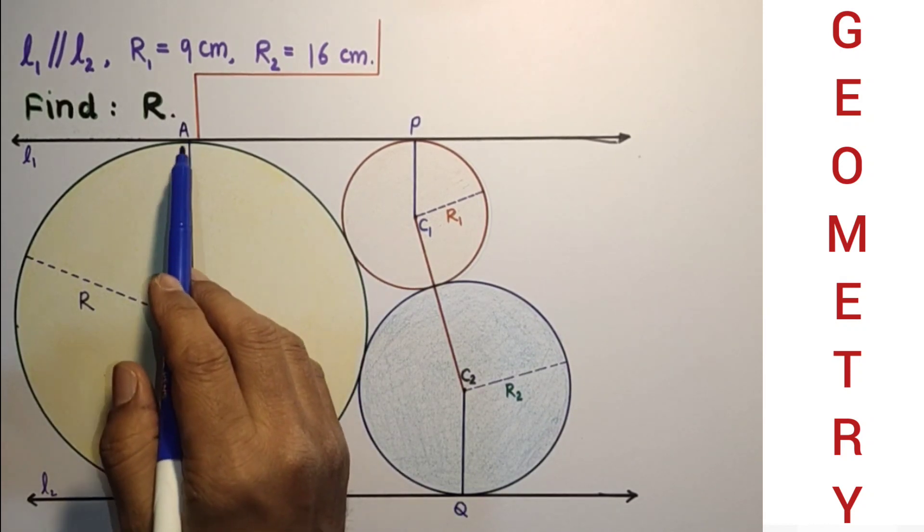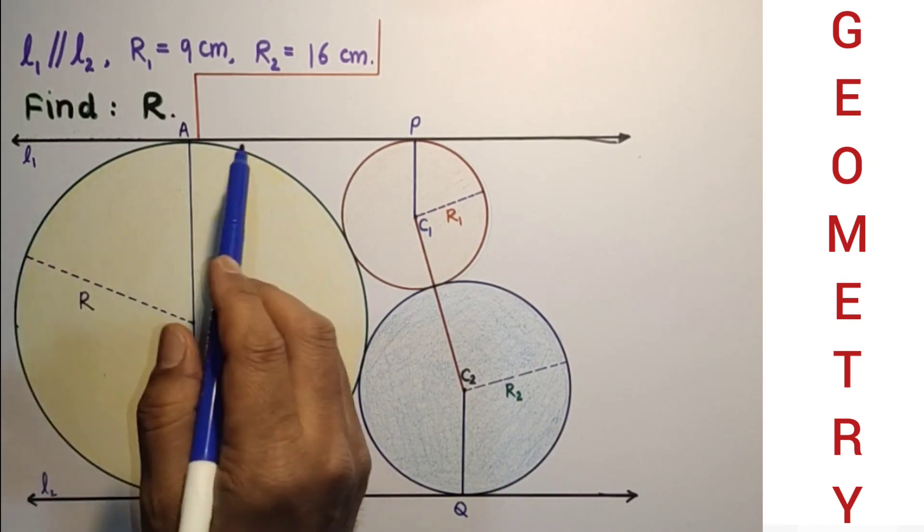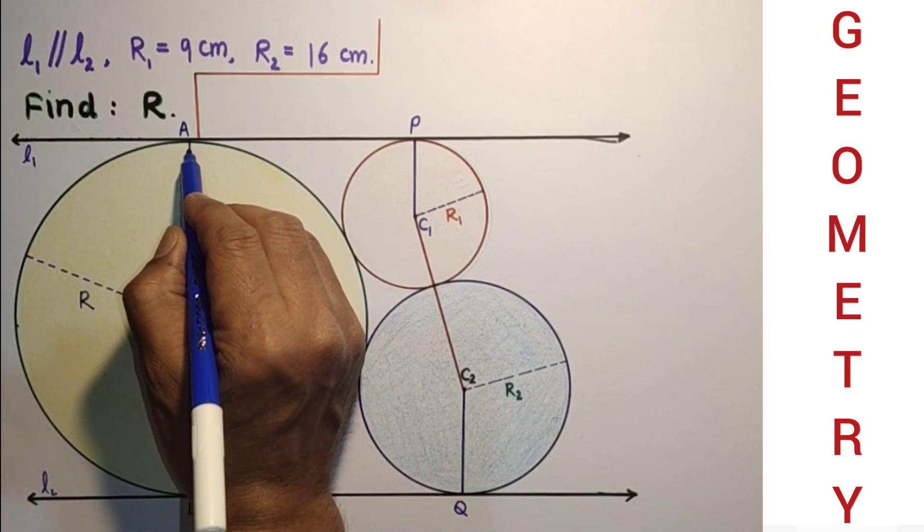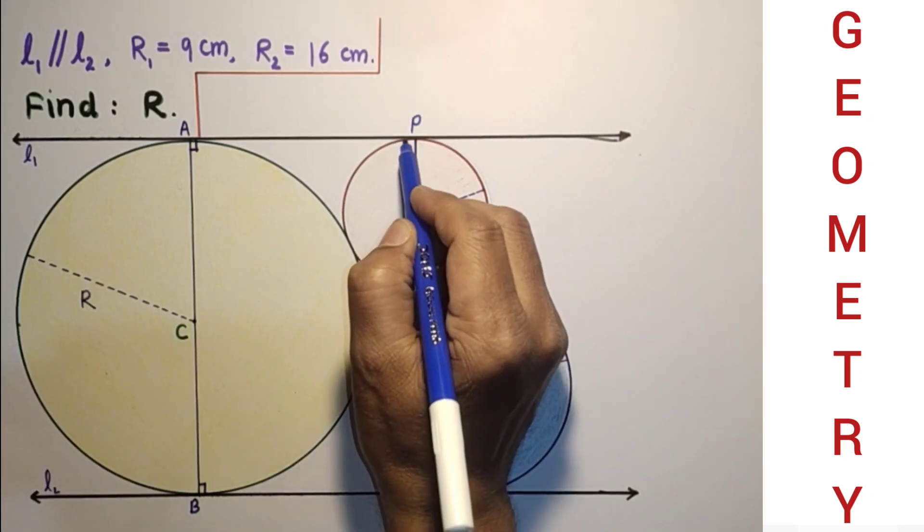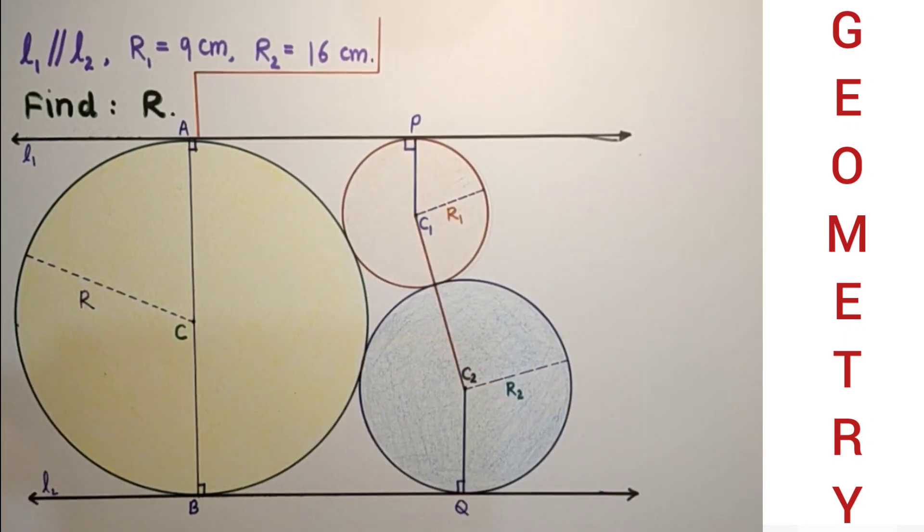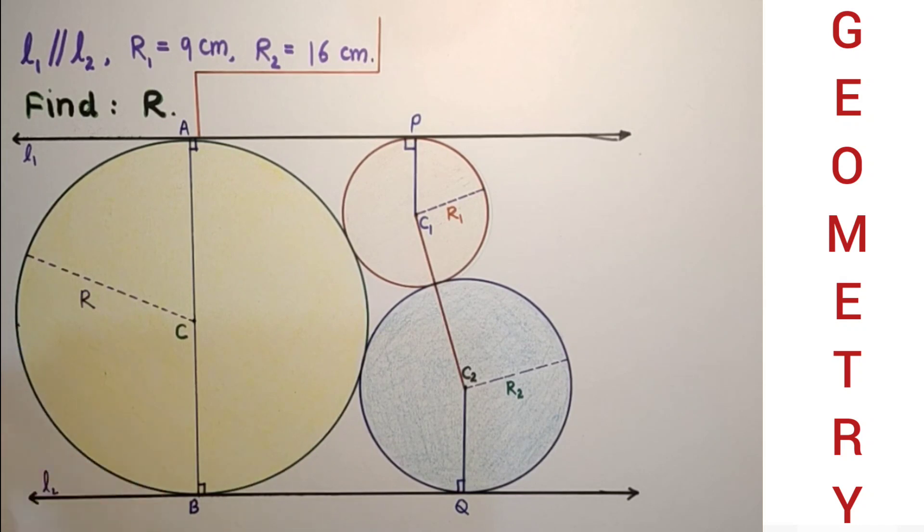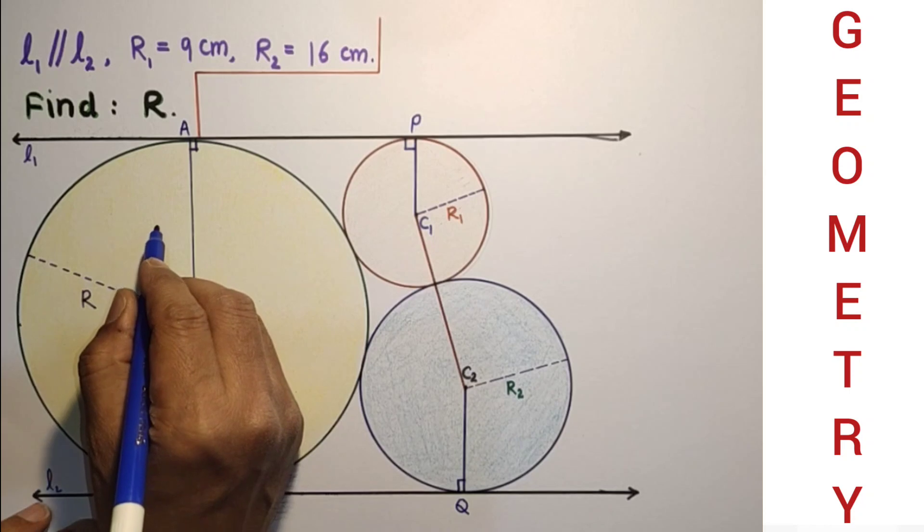Since point of contact from the center with tangent will be perpendicular, this is 90 degrees, this is 90, 90 and this is also 90. Radius of this is unknown and CA is CB which is R. This is also R.